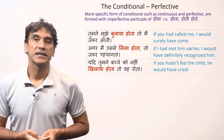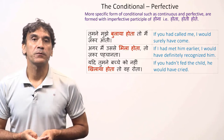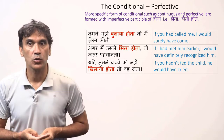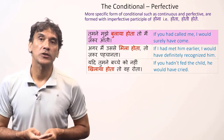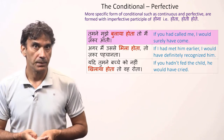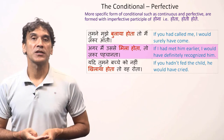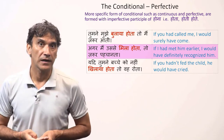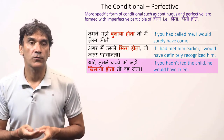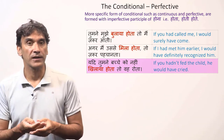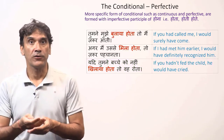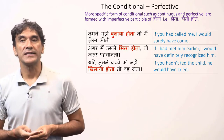Now let's take the conditional perfective. The conditional perfective is formed with the perfective participle and the habitual participle of the helping verb hona — that is, hota, hoti, hote. Examples: if you had called me I would surely have come; if I had met him earlier I would have definitely recognized him; if you had not fed the child he would have cried. The verbs formed in these conditional sentences are shown in red font.